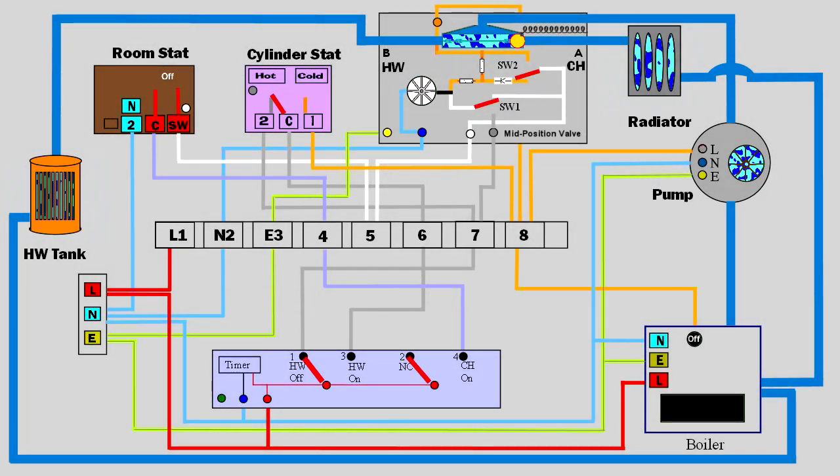Next, we will select hot water only. The hot water thermostat is turned on, and the hot water switch at the controller is turned on. The pump and the boiler start.